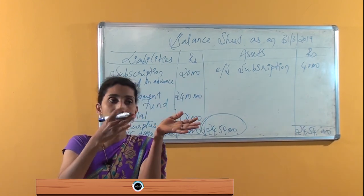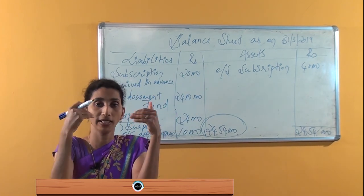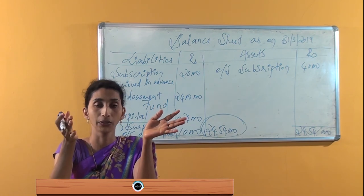Under the balance sheet, the liability and asset sides should tally. If they tally, then the answer is correct.